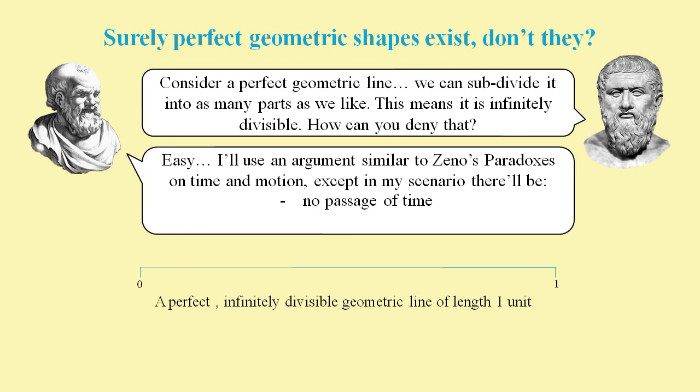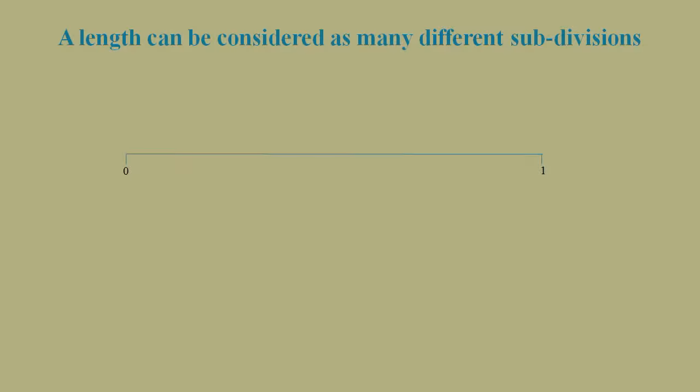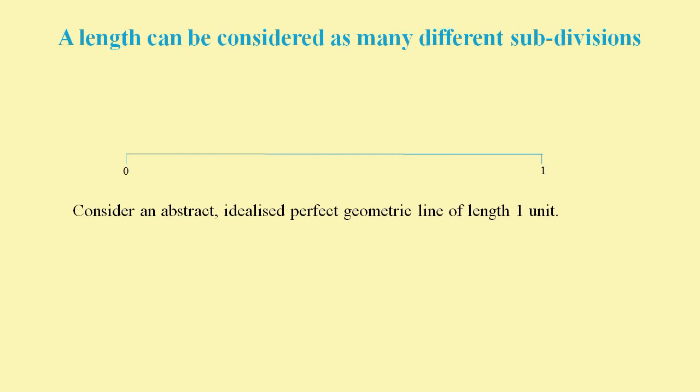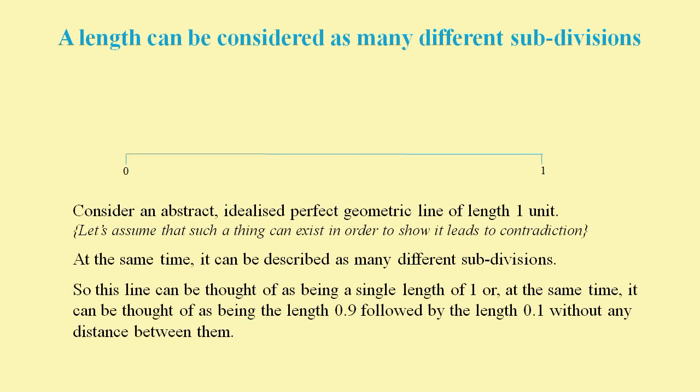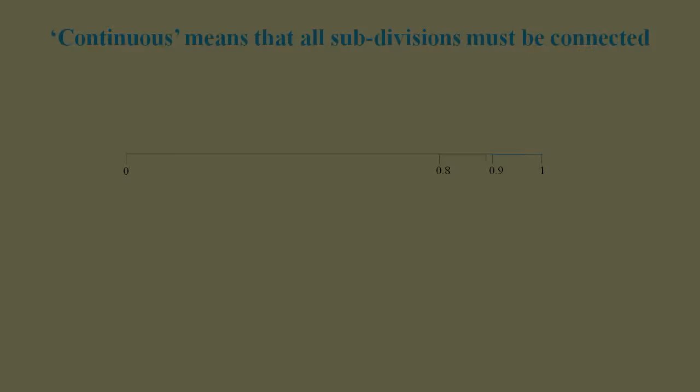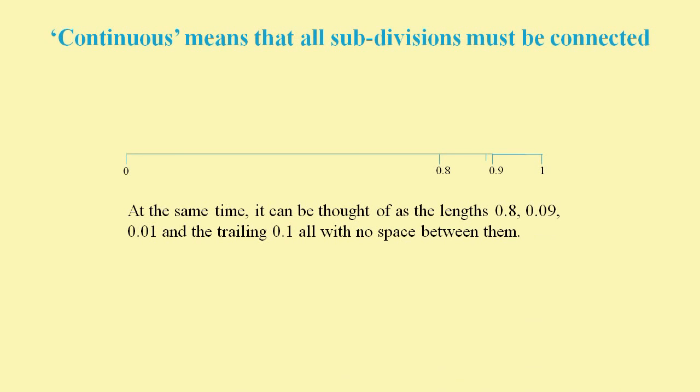First, we'll consider Plato's idealized perfect line of length 1, and we'll make the dubious assumption that such a thing can exist. As well as being described as a single line, at exactly the same time, it could also be described as several smaller lines all joined together. For example, it could be described as a line of length 0.9 followed by a line of length 0.1 without any distance between them. And since the whole length is continuous, there must always be a length immediately before the last length.